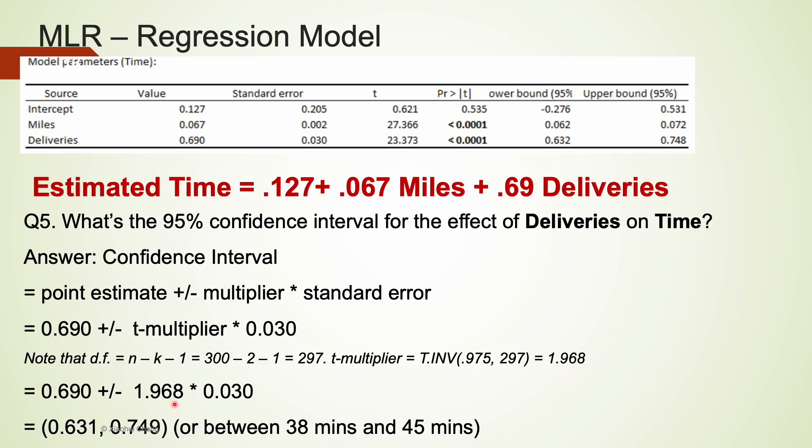Plugging all the numbers into this formula, we were able to find the 95% confidence interval of the effect of deliveries on time is between 38 minutes and 45 minutes. That means we are 95% confident for every one unit increase in deliveries, the time is going to increase anywhere between 38 minutes to 45 minutes.